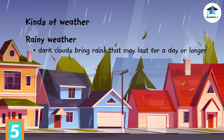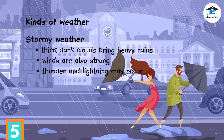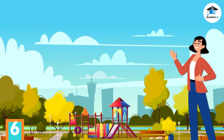On a stormy weather, the sky is covered with thick dark clouds that bring heavy rains. Winds are also strong. Sometimes thunder and lightning occur. Heavy rains may cause flooding in some areas.